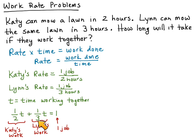She's doing 1/3 of a job per hour, and this is how many hours they're working. She's doing 1/2 the job per hour, and that's how much time each of them is working. So we have (1/2)t + (1/3)t = 1, and this is an equation we can solve.